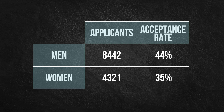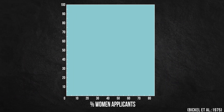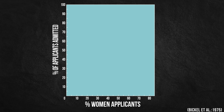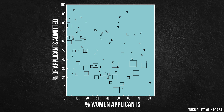They found there was a small but statistically significant bias in favor of women. How they came to this opposite conclusion can best be understood by looking at a scattergram of the proportion of applicants that were women plotted against the proportion of applicants that were admitted. Each box in this plot corresponds to a different department. Departments with higher acceptance rates, in a sense the easier departments to enter like mechanical engineering, are positioned higher in this plot, while departments with lower acceptance rates, like English, are positioned lower.